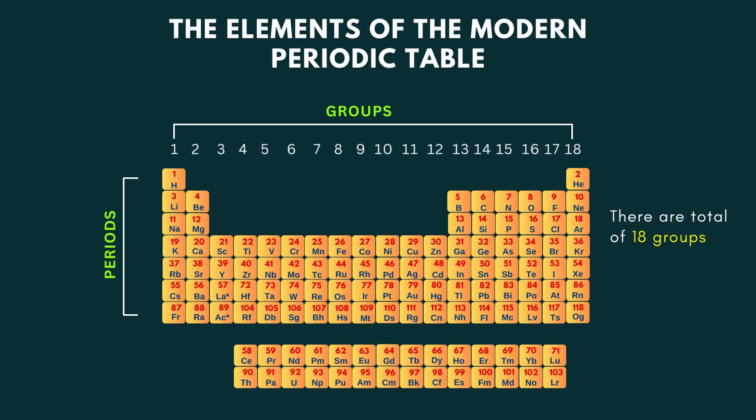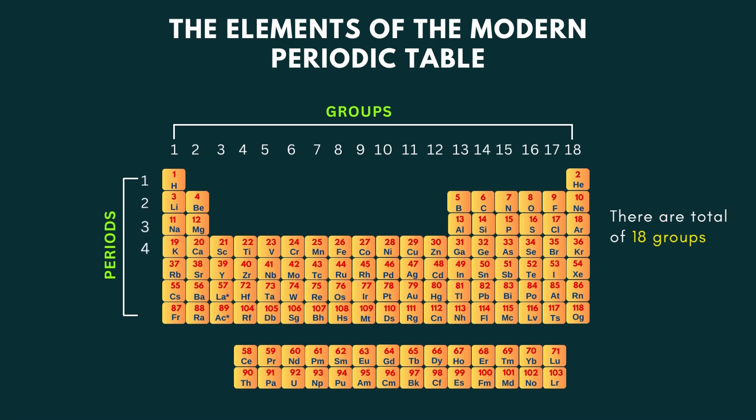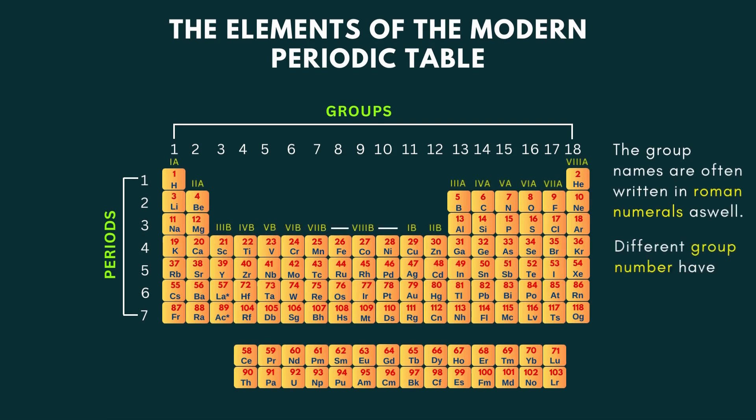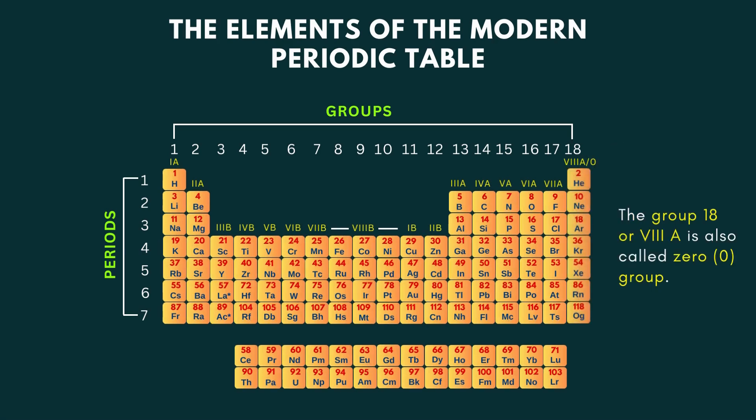There are a total of 18 groups. There are a total of 7 periods. The group names are often written in Roman numerals as well. Different group numbers have their own significance in chemistry. The group 18 or 8A is also called zero group.